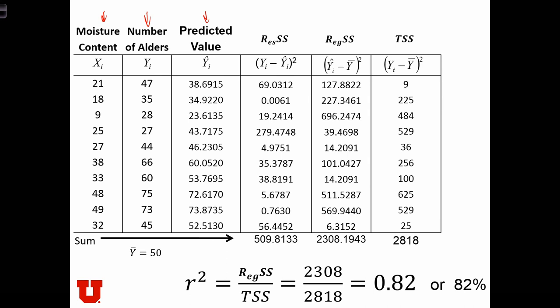We also have our three components to our sums of squares: the residual sum of squares, the regression sum of squares, and the total sum of squares.